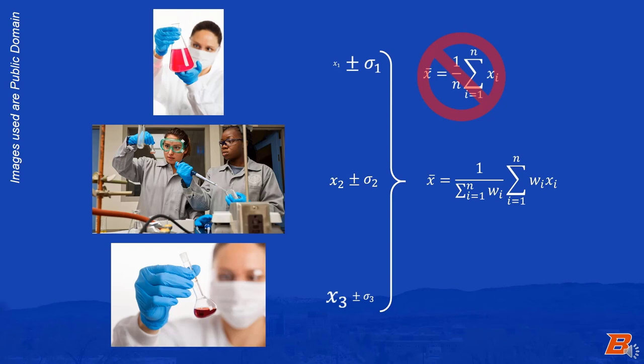Notice that if all the weights are 1, then this equation just becomes the normal average equation we looked at a moment ago. Naturally, we want these weights to be related to our level of uncertainty in the individual measurements. The higher the uncertainty, the lower the weight should be.